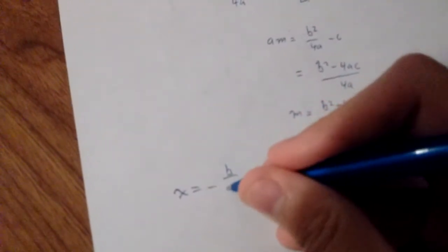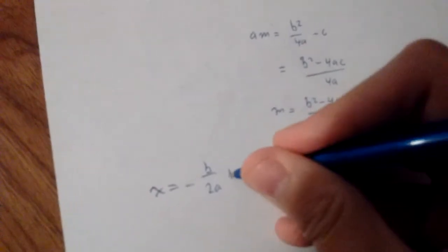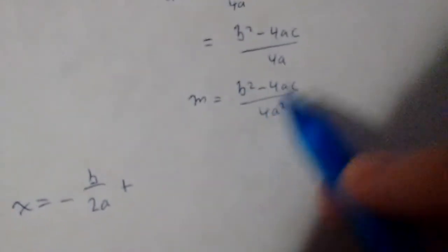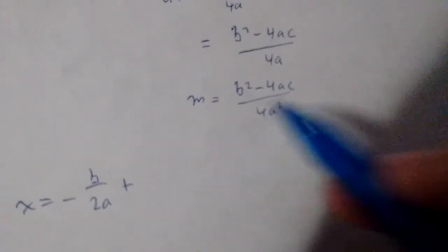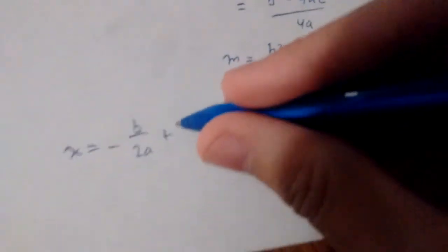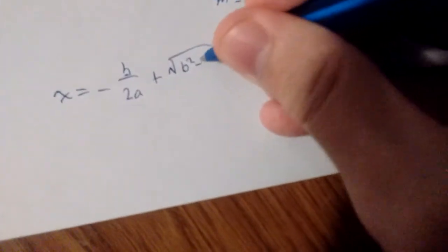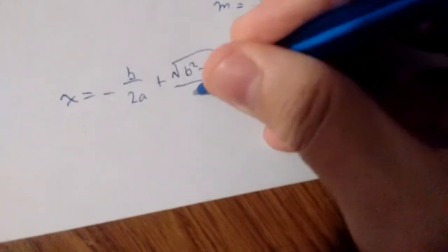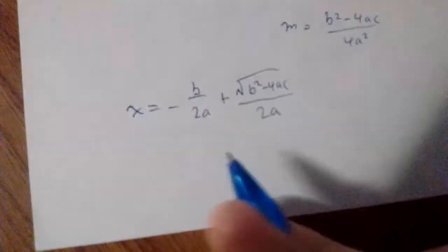We get x equals negative b over 2 a plus the square root of this whole thing. The bottom is a perfect square, so the square root of 4 a squared is 2 a. So we get the square root of b squared minus 4 a c divided by 2 a. And we're done.